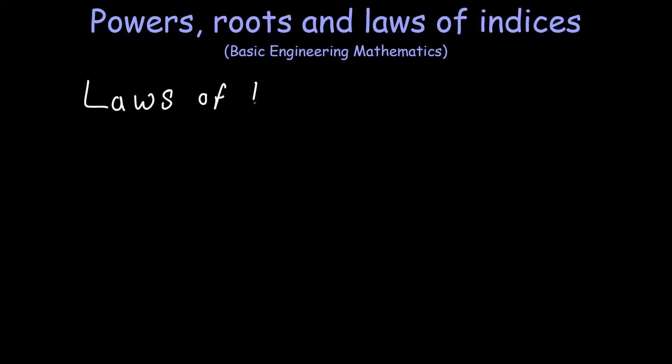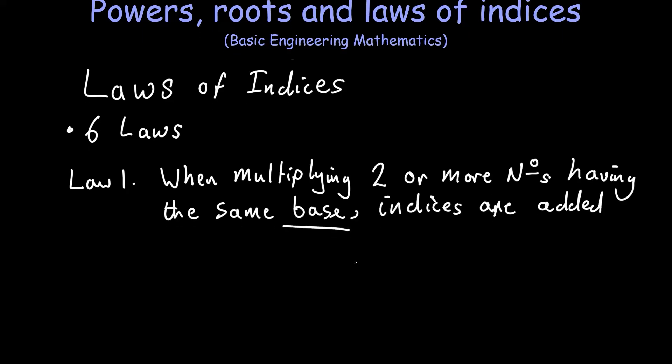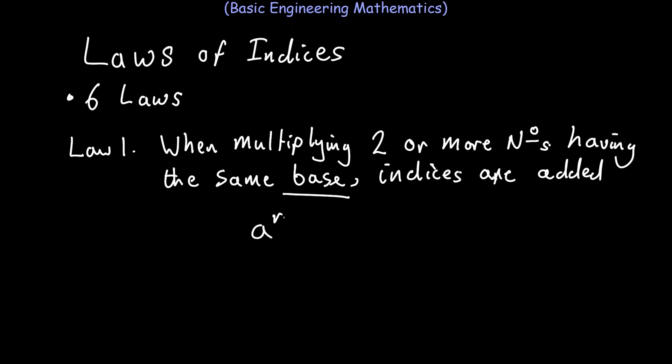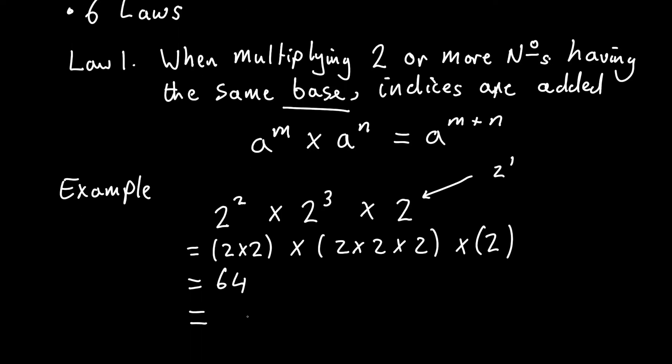So let's go over the 6 laws of indices. Law 1: When multiplying two or more numbers of the same base, indices are added together. This can be expressed algebraically as a to the power of m multiplied by a to the power of n, which equals a to the power of m plus n. So an example might be 2 squared times 2 cubed times 2, which equals 64, but can also be expressed as 2 to the power of 6.